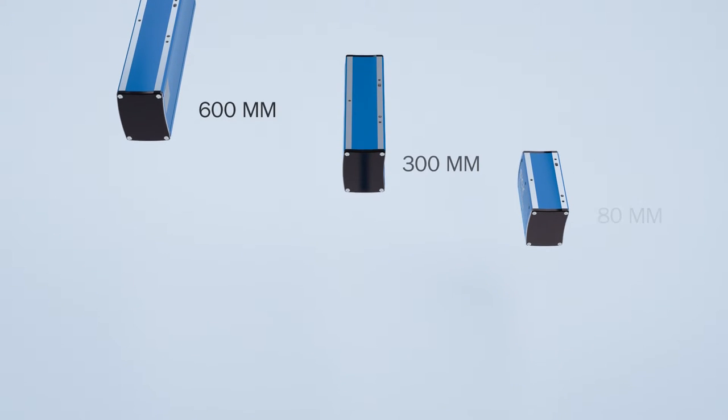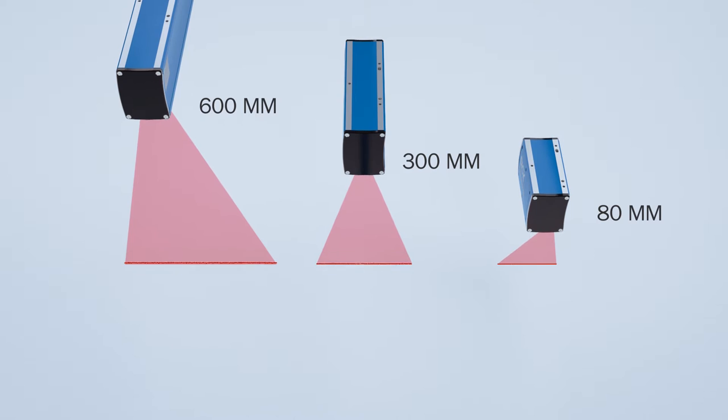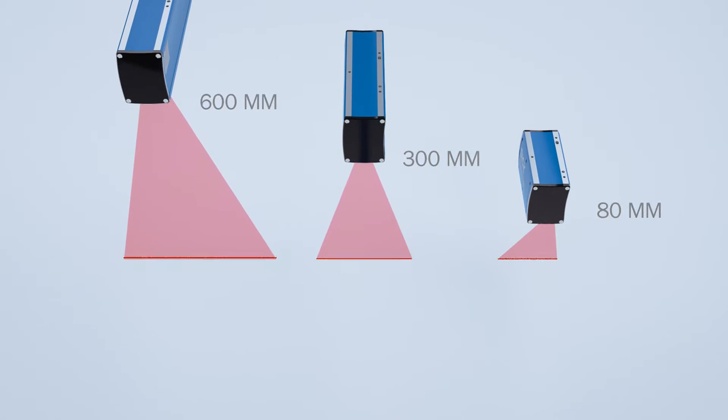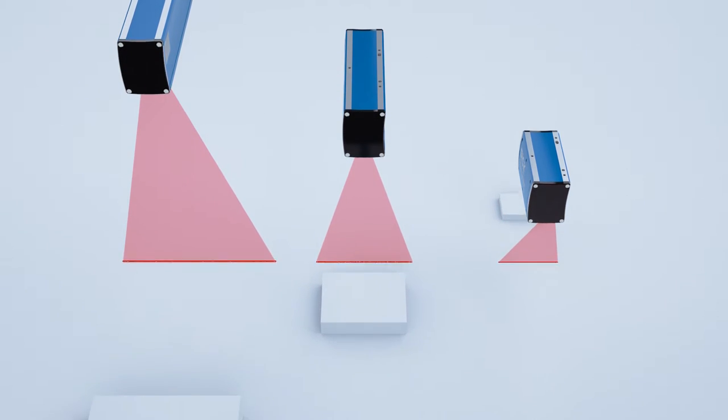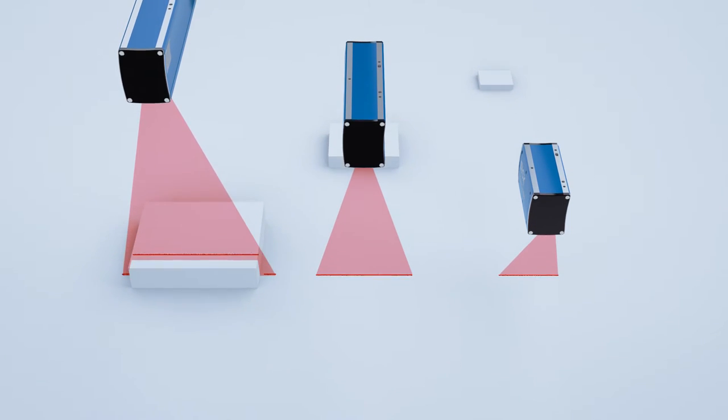TriSpector1000 is available in 3 different sizes with 3 different fields of view. This allows scanning of small to large object sizes depending on your needs.